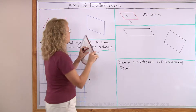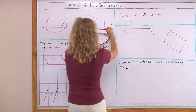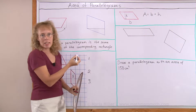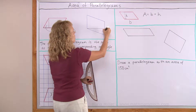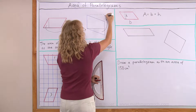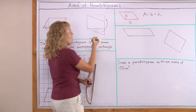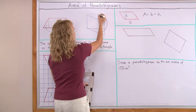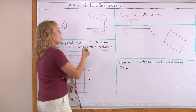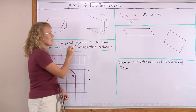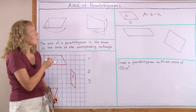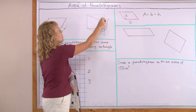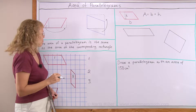The same I can do here. I can cut off this triangle and move it over there. After that I will have a rectangle. So the area of a parallelogram is the same as the area of its corresponding rectangle. After you cut the piece and move it there you will always get a rectangle.